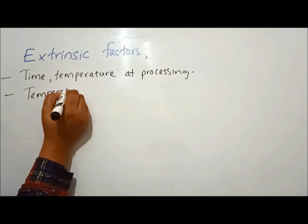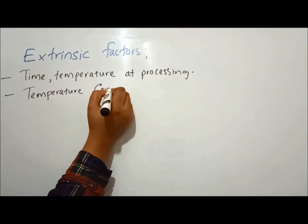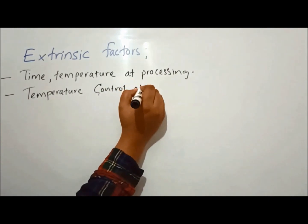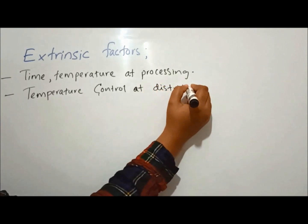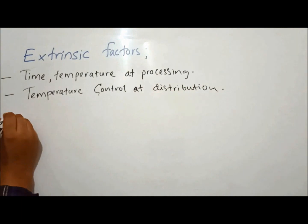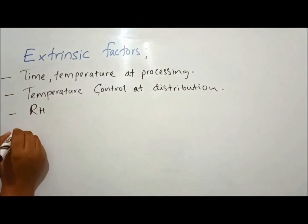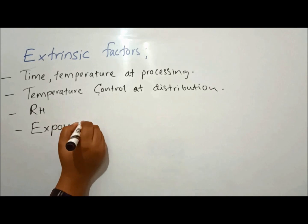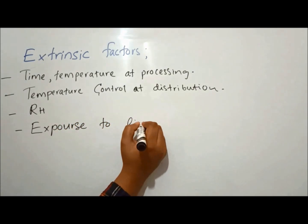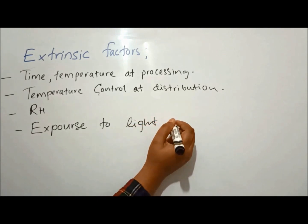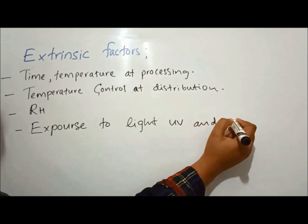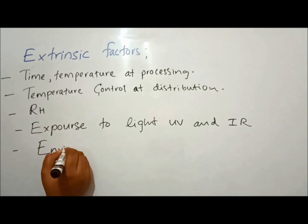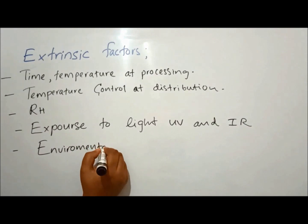Temperature control during storage and distribution. Relative humidity during processing, storage and distribution. Exposure to light — UV and IR — during processing, storage and distribution. Environmental microbial counts during processing, storage and distribution.